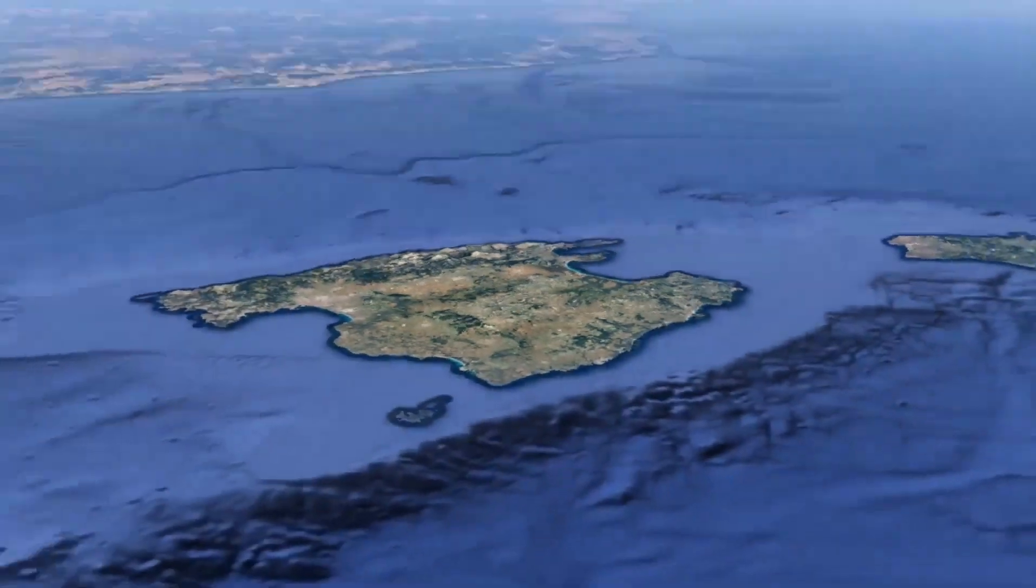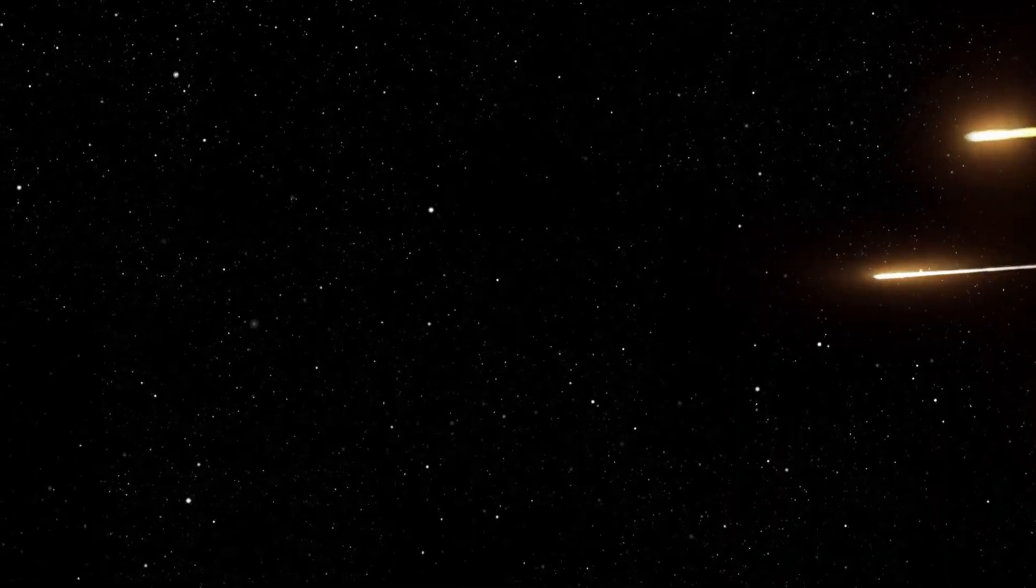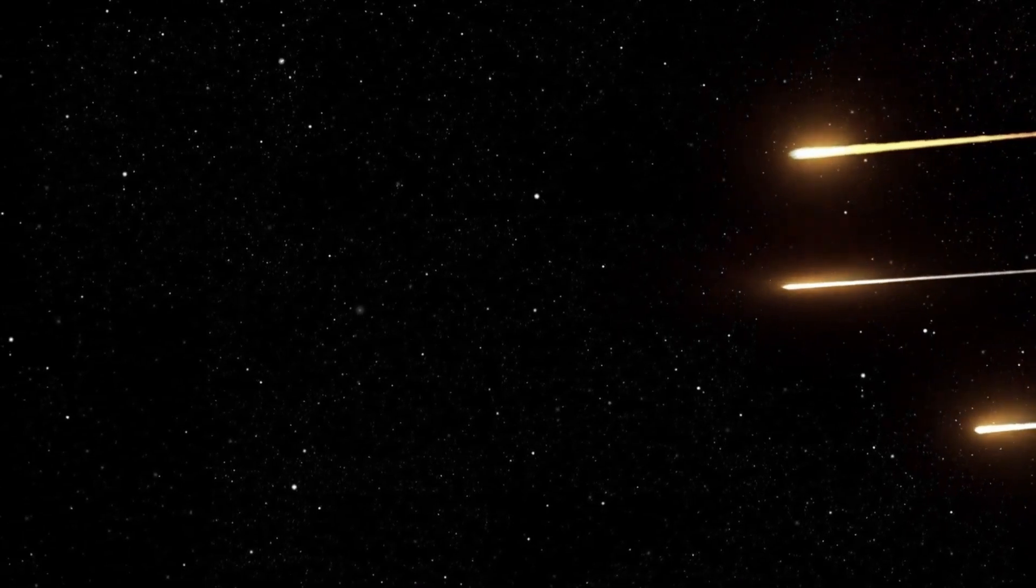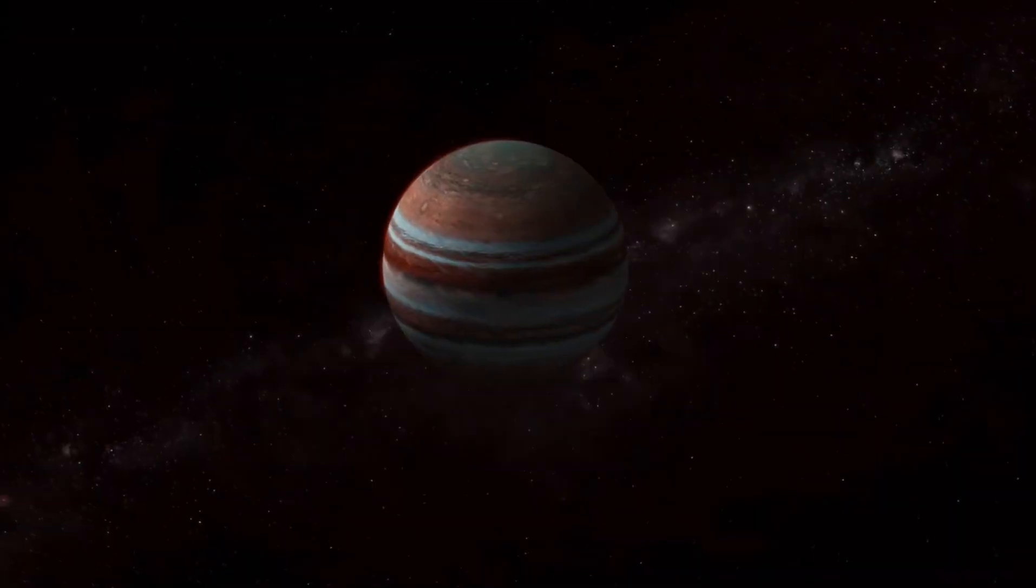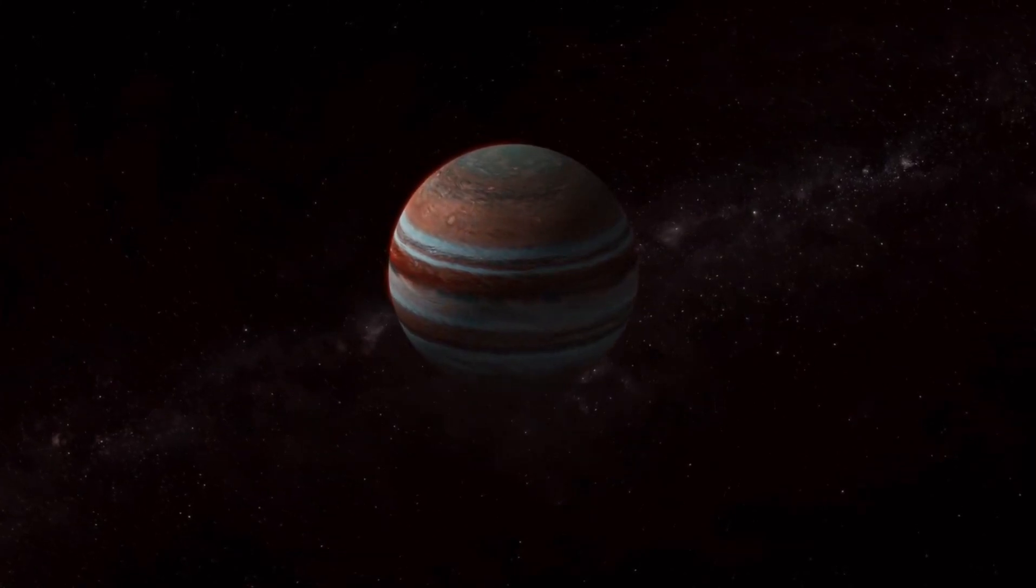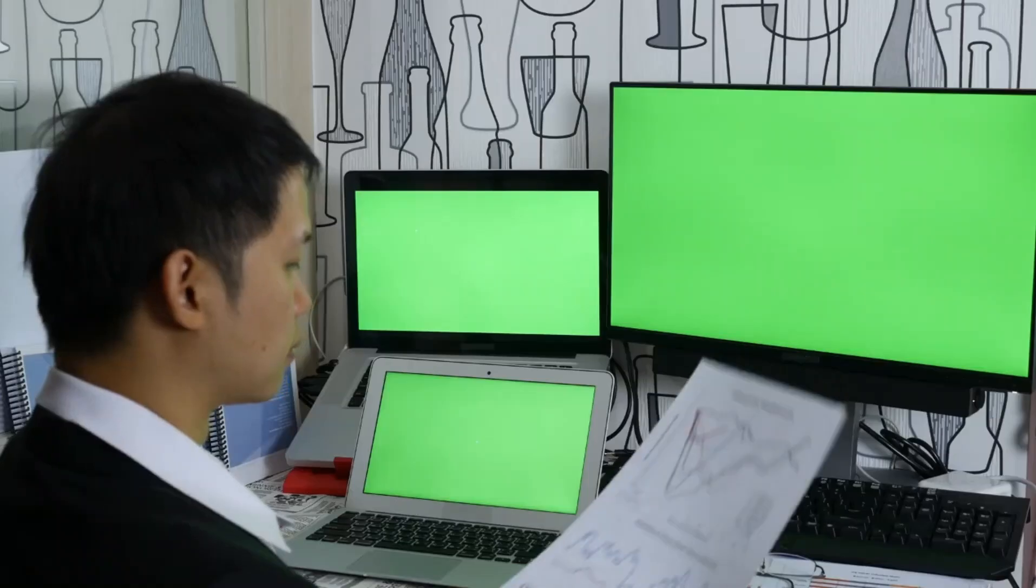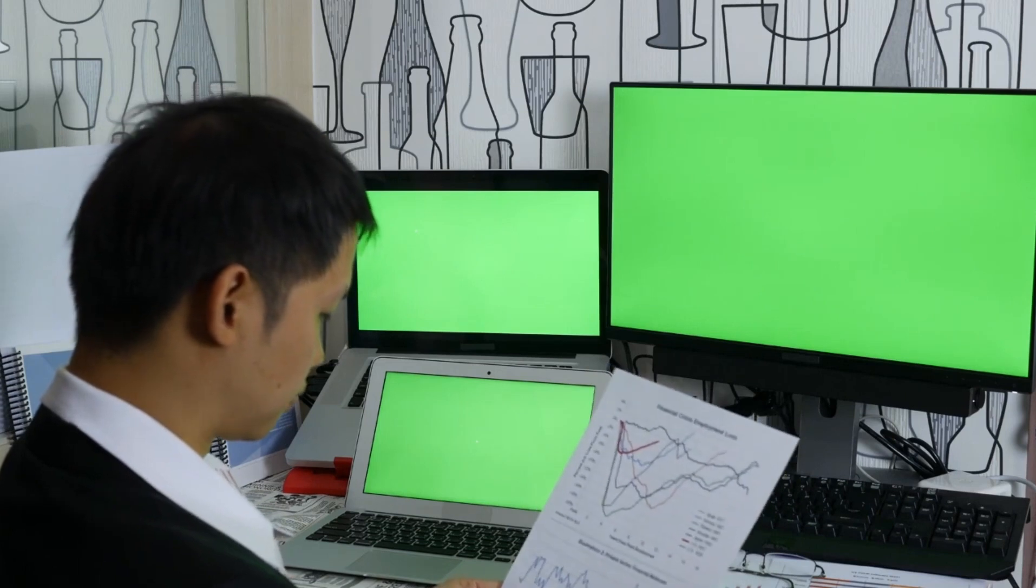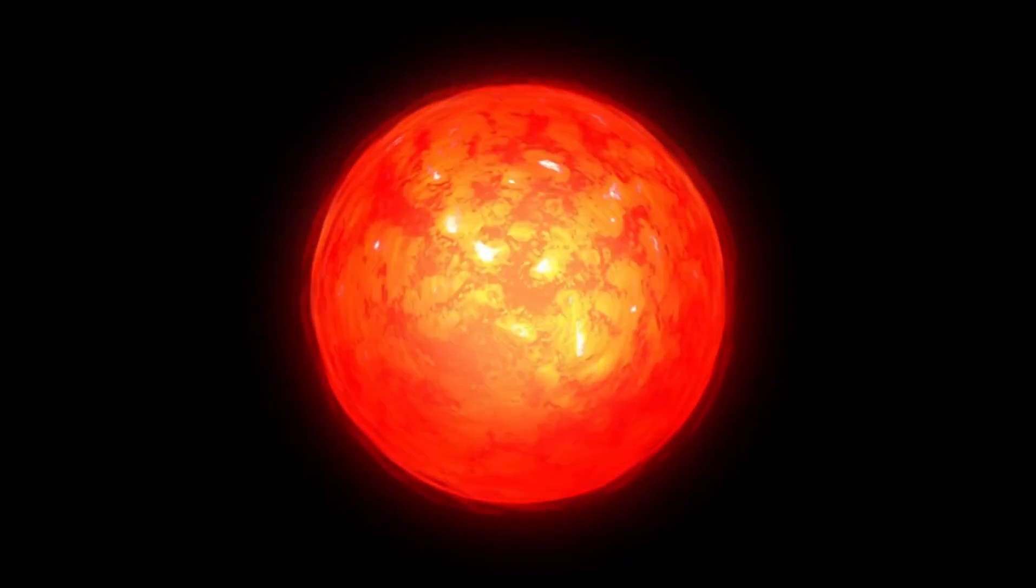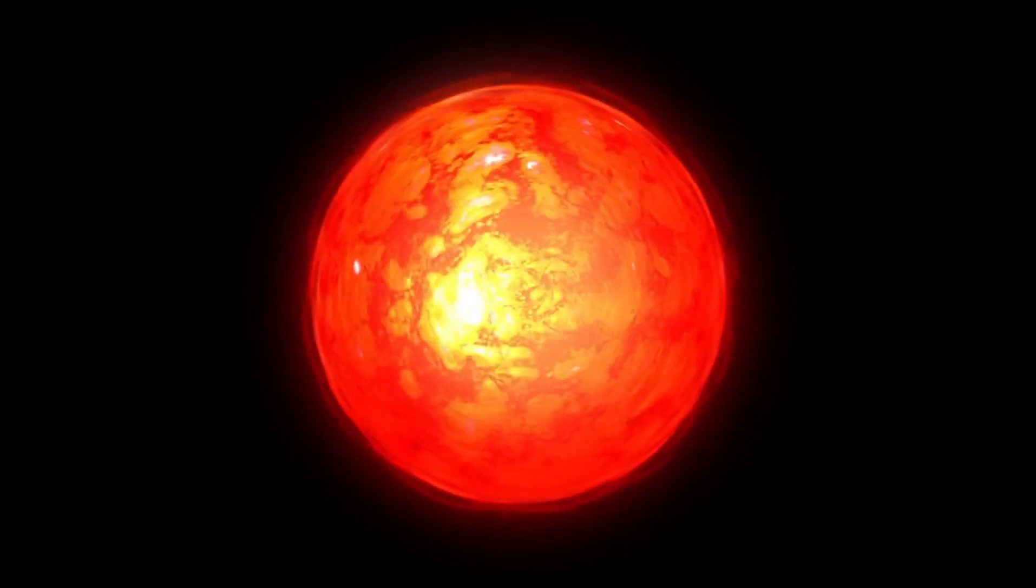K2-18b is a super-Earth, a term used to describe planets that are larger than Earth but smaller than Neptune. It resides in its solar system as a sub-Neptune, a type of planet that is unlike anything we have in our own solar system. While it is larger than Earth, it is smaller than Neptune, making it difficult for scientists to place it neatly into existing planetary categories. This unique classification presents a significant challenge for scientists who are trying to understand what K2-18b is really like.